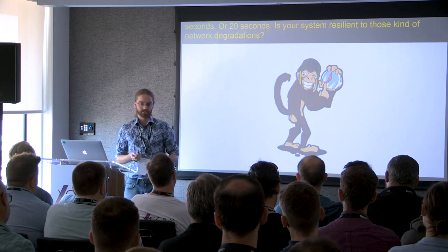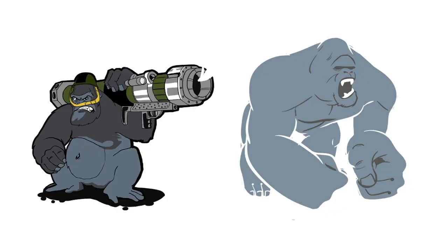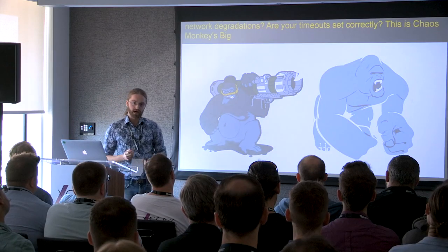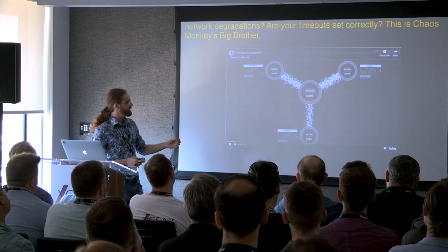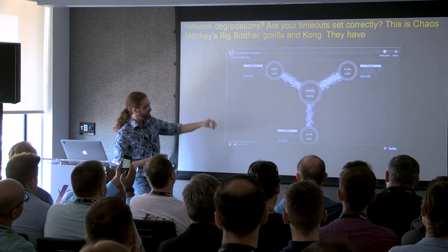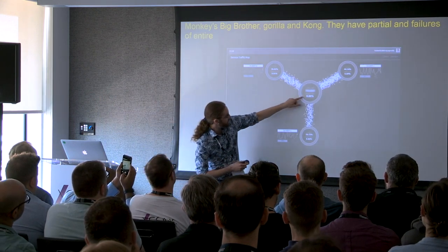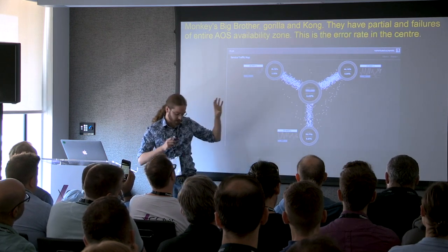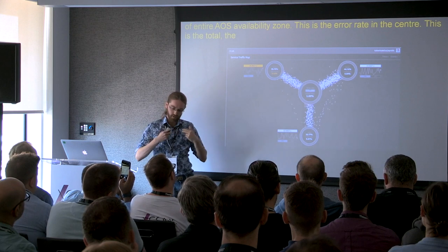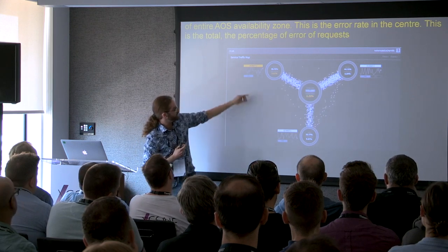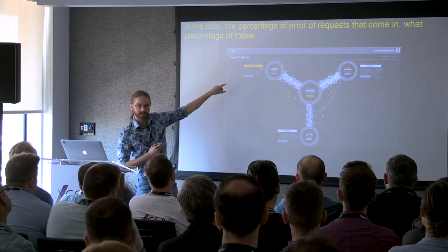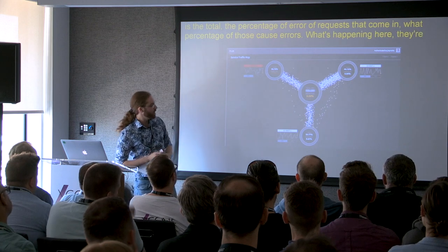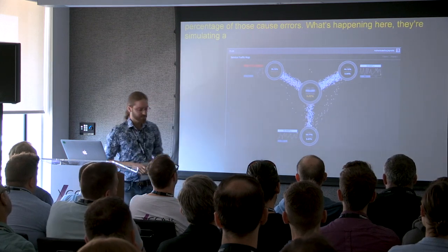These are Chaos Monkey's big brothers: Chaos Gorilla and Chaos Kong. They simulate partial and complete failures of entire AWS availability zones. This is a Netflix monitoring tool—look at this error rate in the center. This is the total percentage of requests that come in—what percentage of those cause errors? You see what's happening here is they're simulating a failure of an entire availability zone.